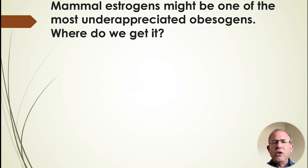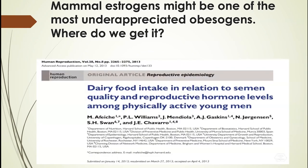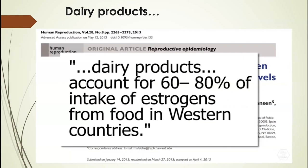Mammal estrogens may be one of the most underappreciated obesogens, and we get them from dairy. Dairy accounts for 60 to 80 percent of estrogens from food in western countries. You might see 'no added hormones' on a bottle of milk, but that doesn't mean there are no hormones. By definition, if you're eating flesh or a body part from a mammal, there are estrogens and other hormones — that's part of how mammals survive.